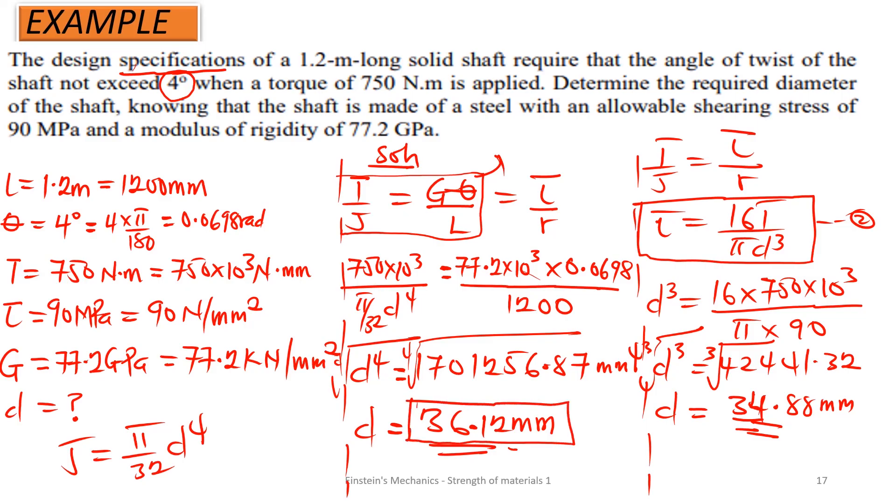So we stick to the one with the restriction. That is, don't exceed that. Meaning, the diameter, the required diameter that we are going to choose, is going to be the 36.12, because we are not to exceed an angle of twist of that. And this is gotten from that parameter. Therefore, our D required is 36.12 mm.